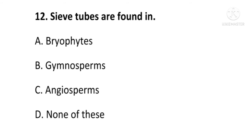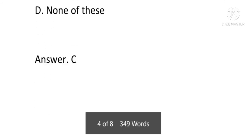Next question: sieve tubes are found in — bryophytes, gymnosperms, angiosperms, or none of these? The answer is C, angiosperms. Sieve tubes are found in angiosperms. C is the correct option.